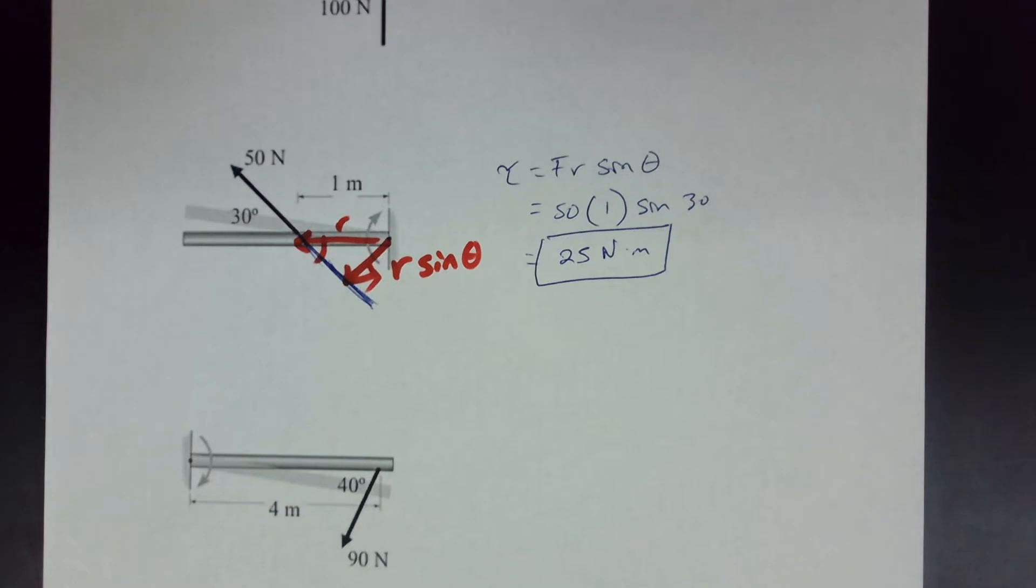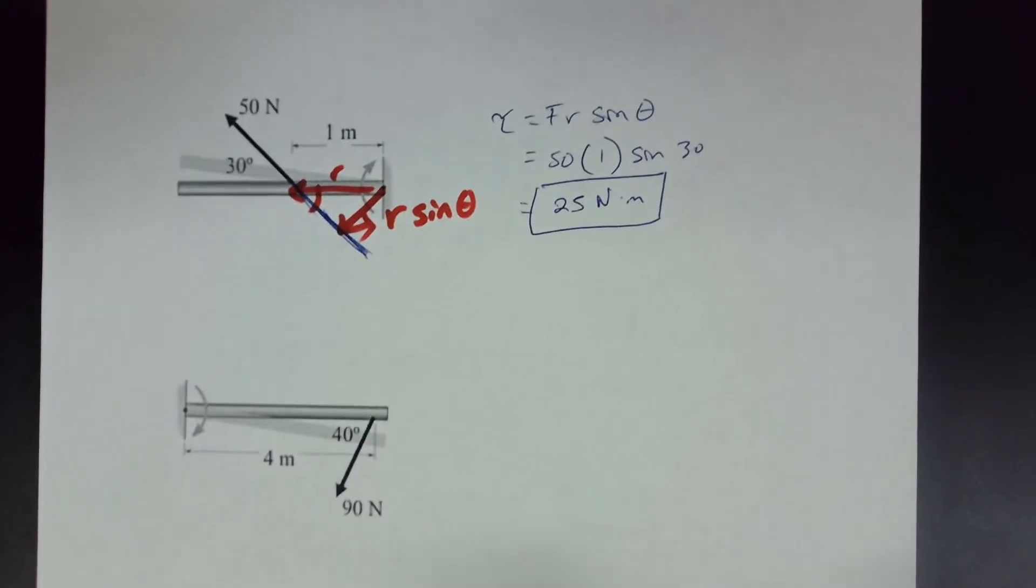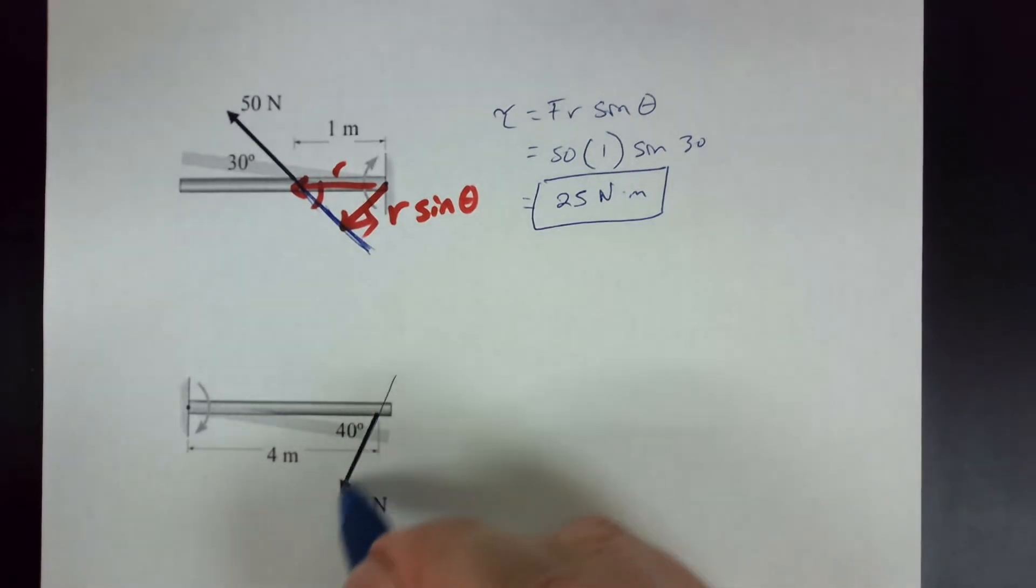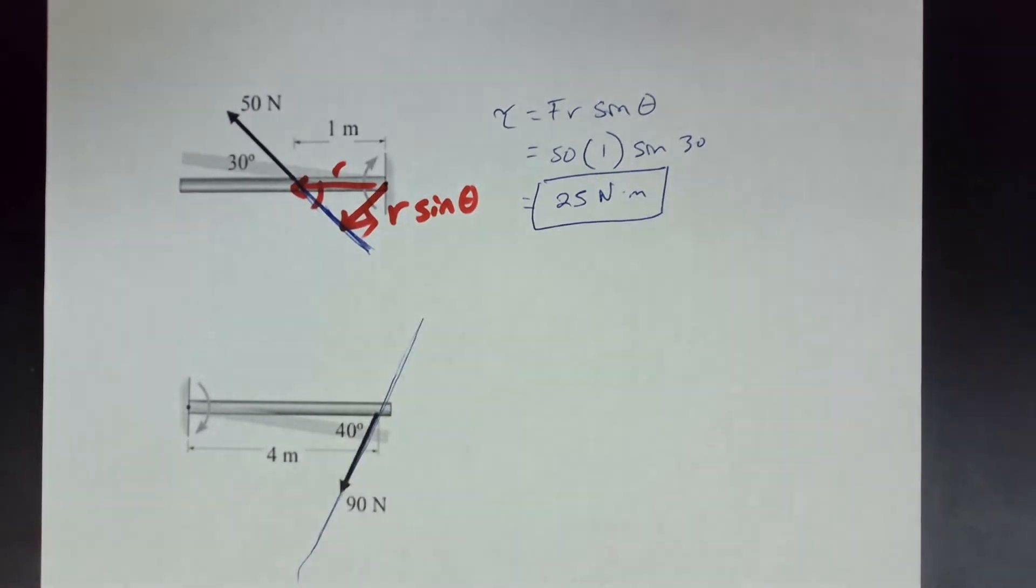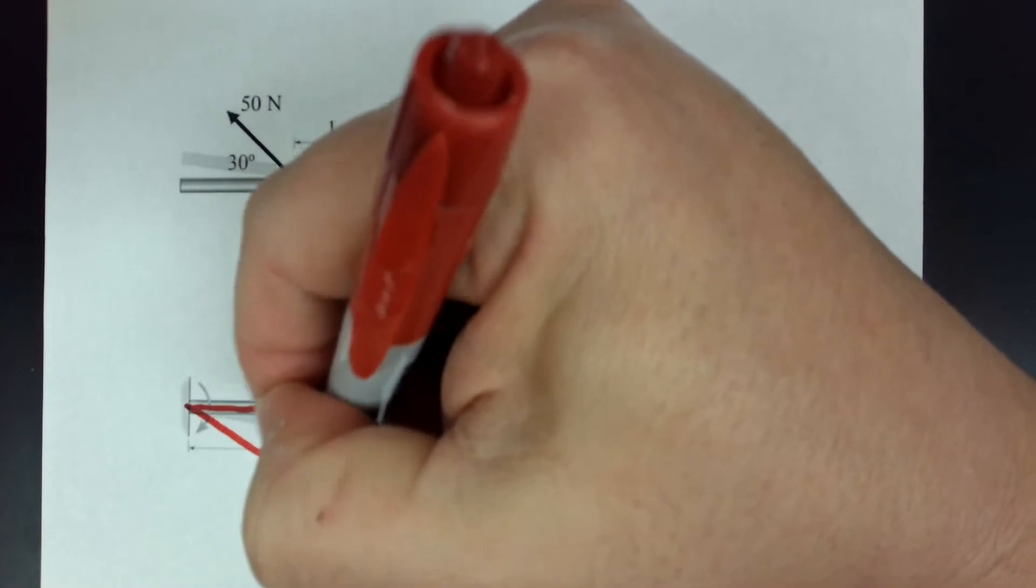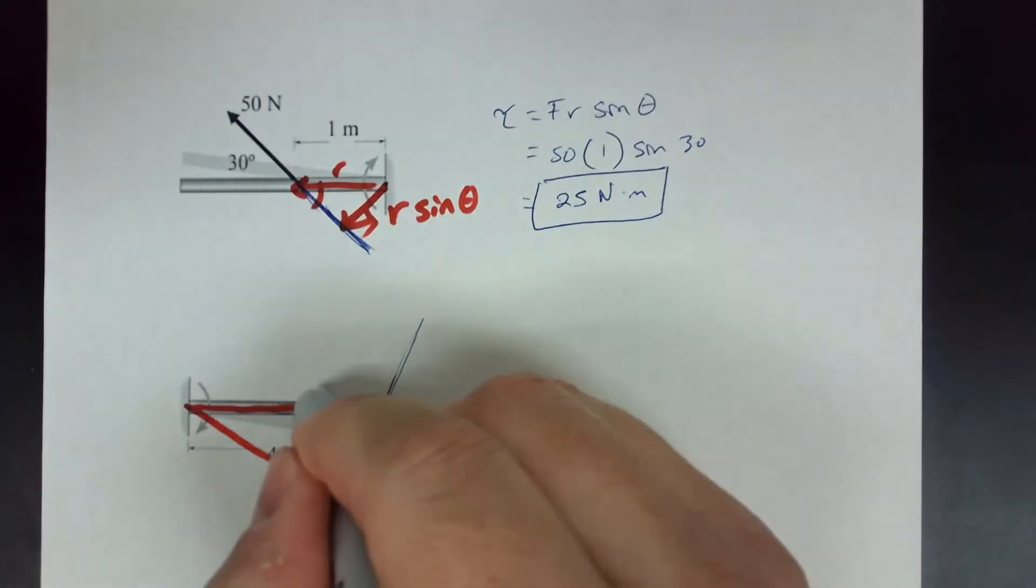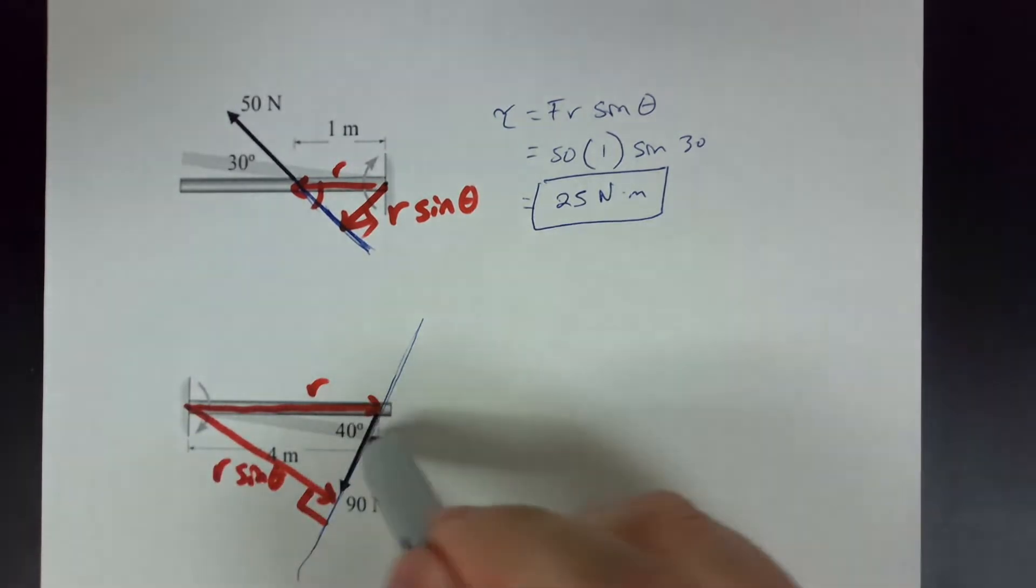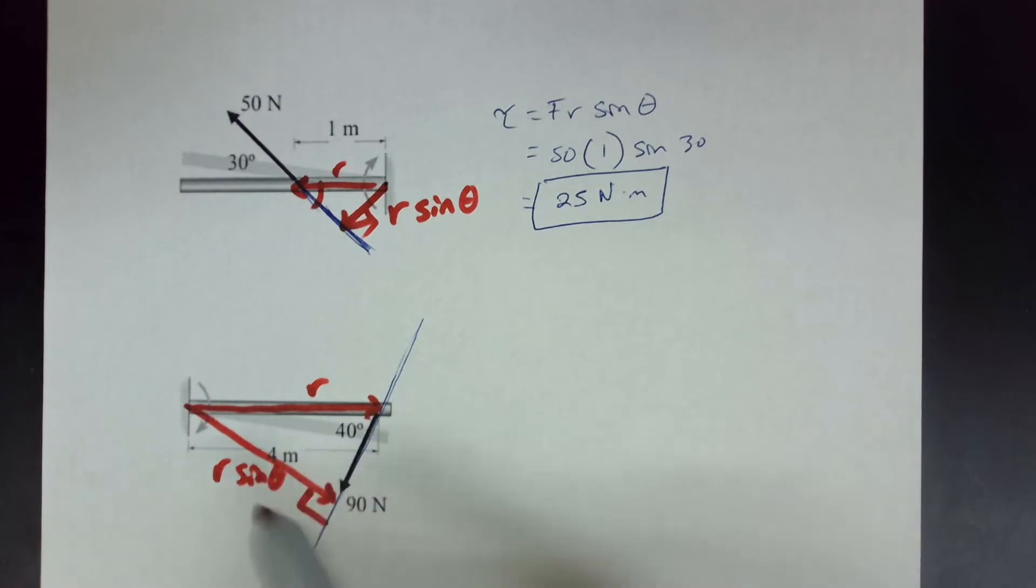What about something like this? Same concept. So here's my force, here's the line of action. So R, even though this is R, this is the part of R where they're perpendicular. So if this is R, this is R sine theta. And theta is 40 degrees. 40 sine is opposite, that's why I'm using sine. Makes it easy.